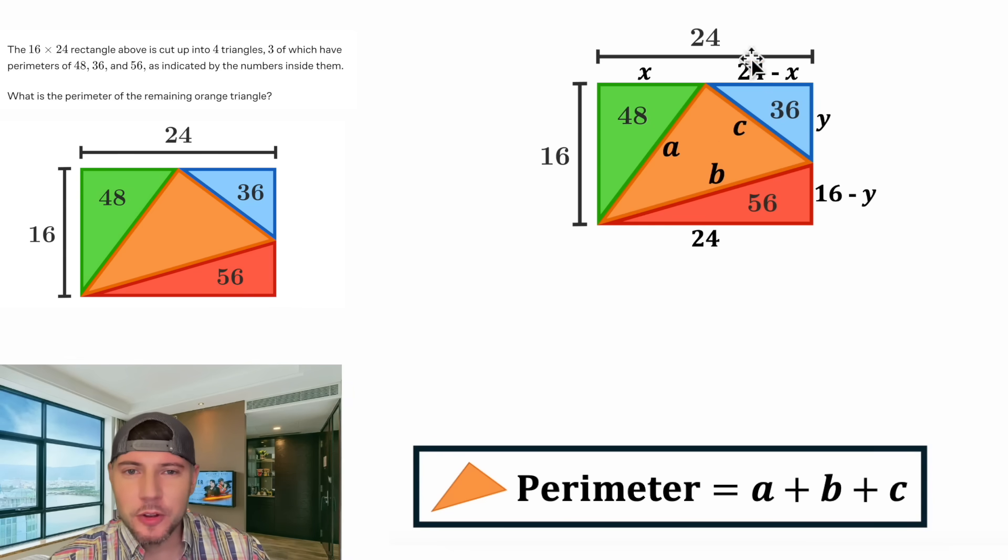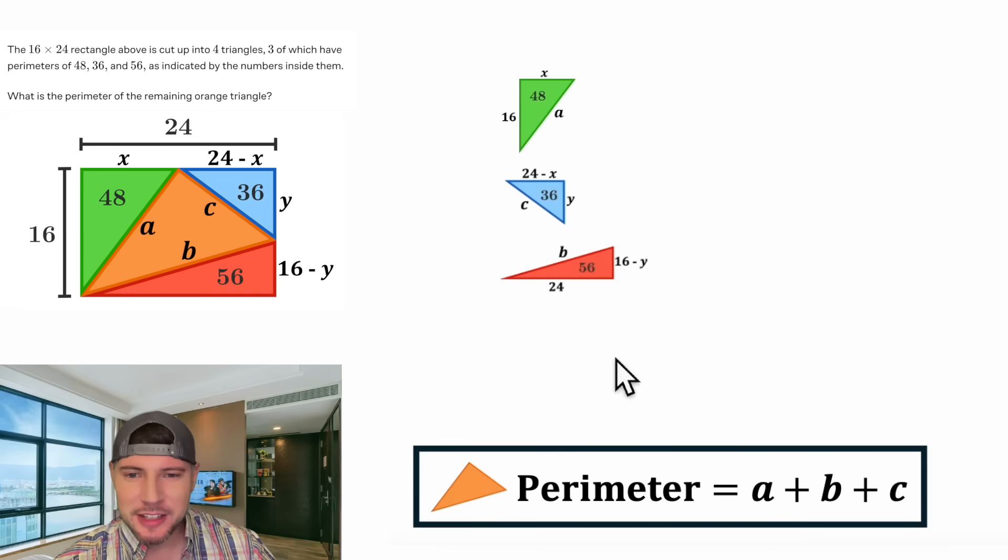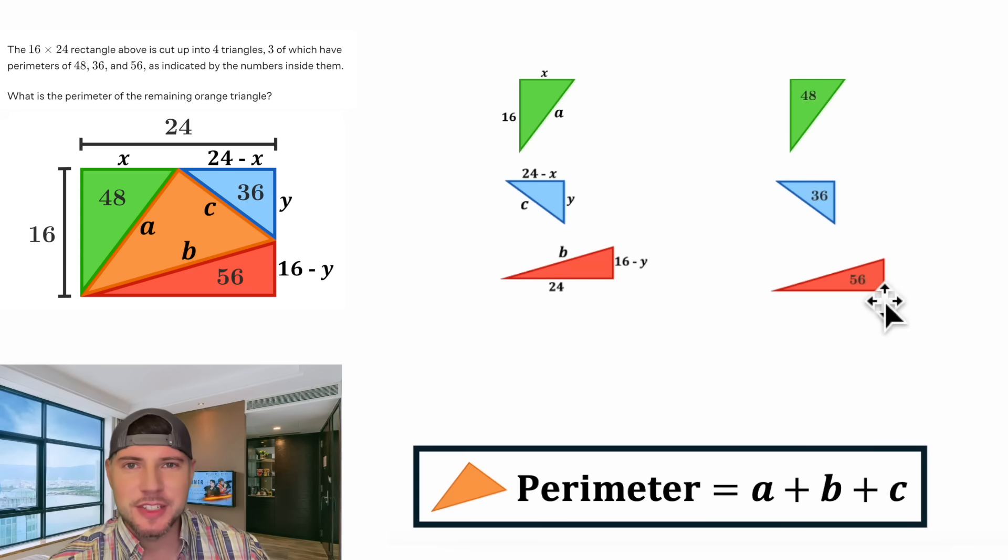From here, we'll set the sums of all the sides of all three triangles equal to the known perimeters. I'll show you what I mean. Let's copy this down here, get rid of the orange triangle, and smush these over here. Let's take the three triangles and duplicate them over here. On this side, let's focus on the side lengths. So all the sides have a variable or number. And then on these three, let's focus on the known perimeters, the 48, the 36, and the 56.